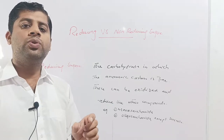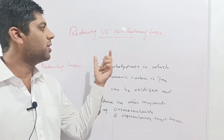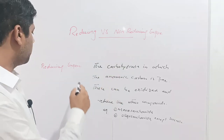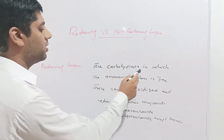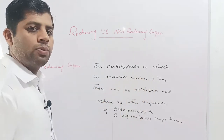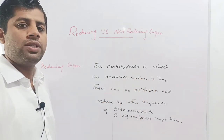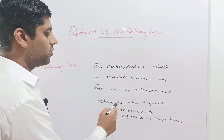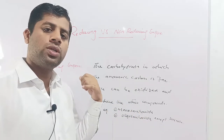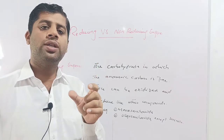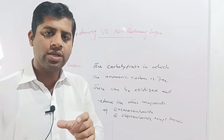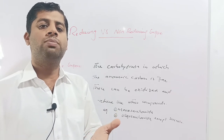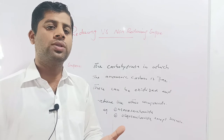Carbohydrates are referred to as sugars, so reducing and non-reducing sugars are classes of carbohydrates — the saccharides. Reducing sugar may be defined as the carbohydrate in which the anomeric carbon is free. The anomeric carbon is basically the first carbon derived from the carbonyl group. These can be oxidized and reduce other compounds, so reducing sugars act as reducing agents.